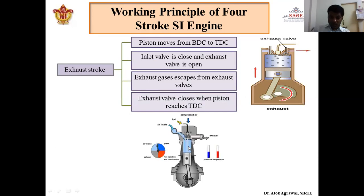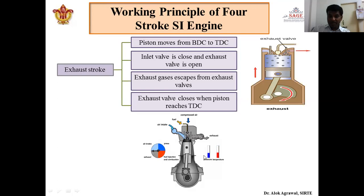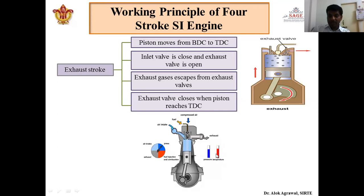This animated picture shows the working of a 4-stroke CI engine: when the piston moves down it is the suction stroke, then compression, then combustion occurs, and then the exhaust stroke. It can also be seen how pressure and temperature vary with the motion of the piston — when compression occurs pressure and temperature are very high, and when expansion occurs pressure and temperature both decrease.